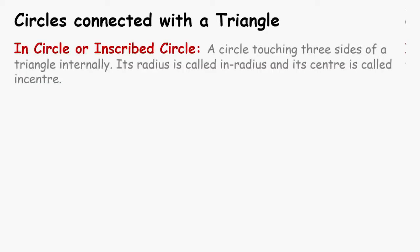Now, we will discuss circles connected with a triangle. The first circle is in-circle or inscribed circle. A circle touching three sides of a triangle internally is called in-circle. Its radius is called in-radius and its center is called in-center.